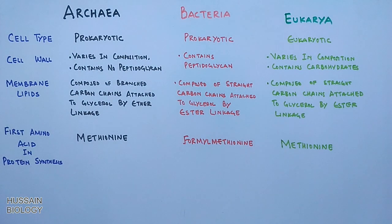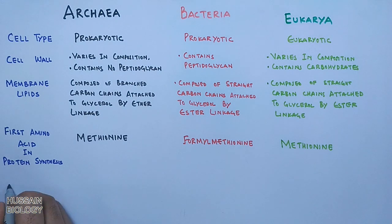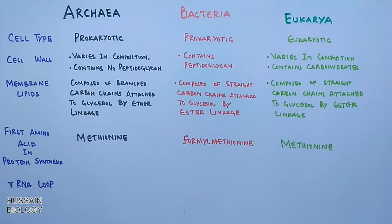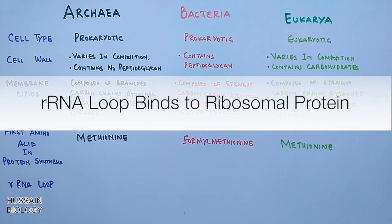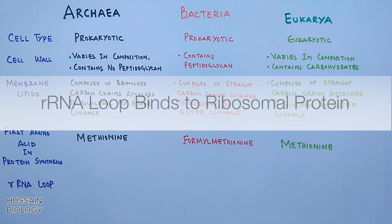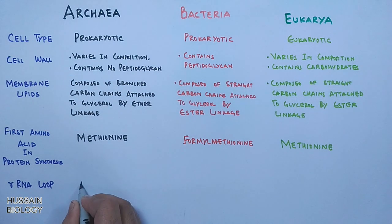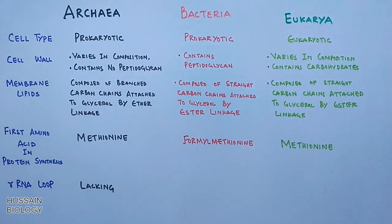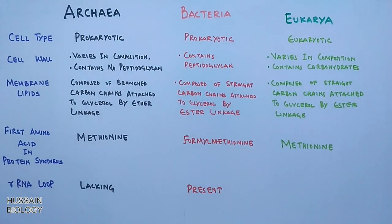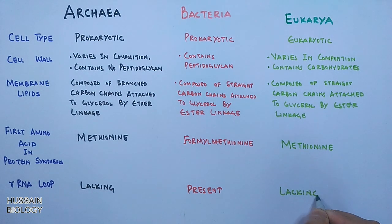Another important comparison is the presence or absence of the rRNA loop, which binds to ribosomal protein. In Archaea, this rRNA loop is lacking. In Bacteria, it is present. In Eukarya, it is also lacking, like in Archaea.